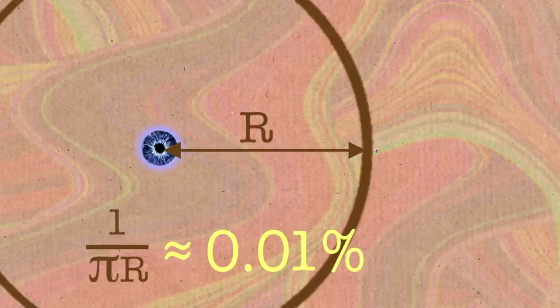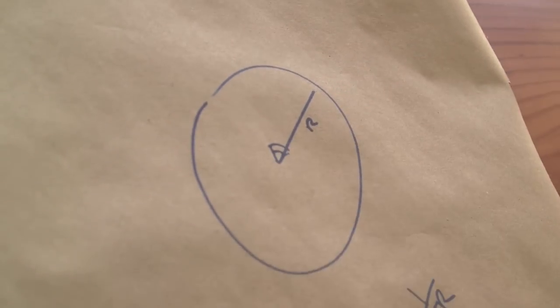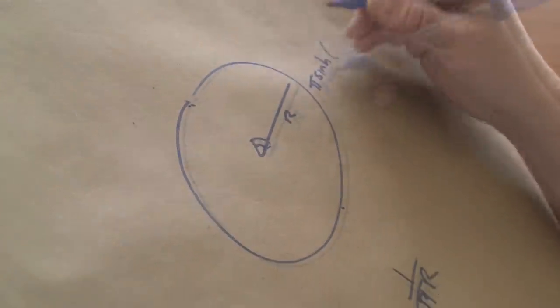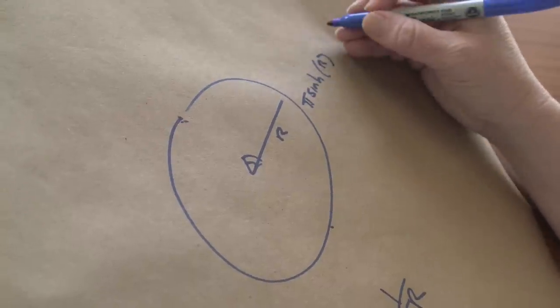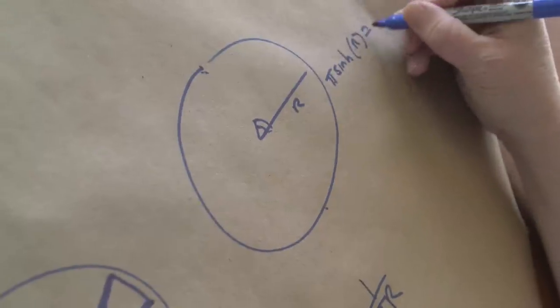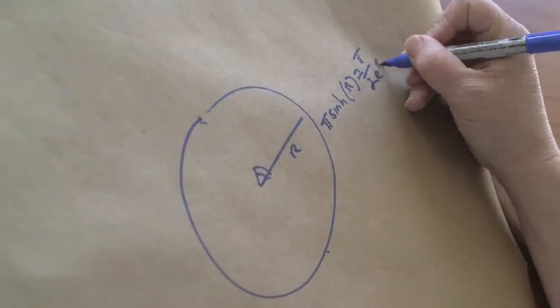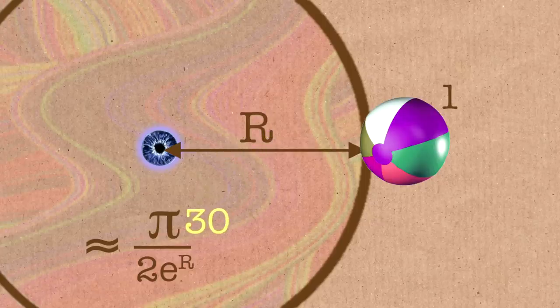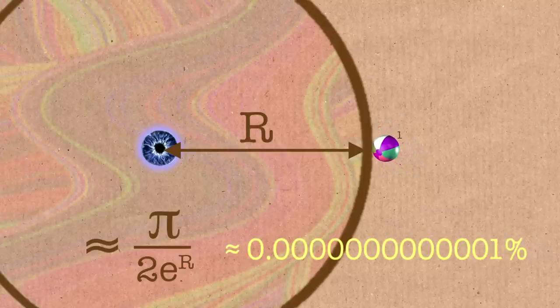So what happens in hyperbolic space? We make the same estimate. Here's your thing of radius R, and there's your eye sitting at the middle. How big is your field of vision? Your field of vision is now half the length of the circle, so it's pi times sinh(R), which is roughly pi over 2 times e to the R. So even if it's 30 feet away, it takes up like 0.000000-something percent of your field of vision. It turns out that the beach ball doesn't take up as much as one one-thousandth of your field of vision until you're within less than seven feet.